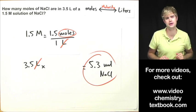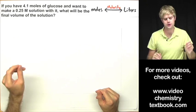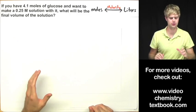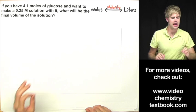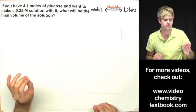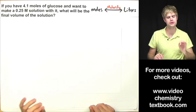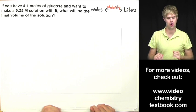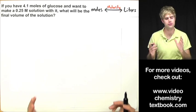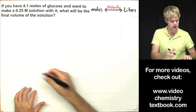Here's the next one. If you have 4.1 moles of glucose and want to make a 0.25 molar solution with it, what will be the final volume of the solution?